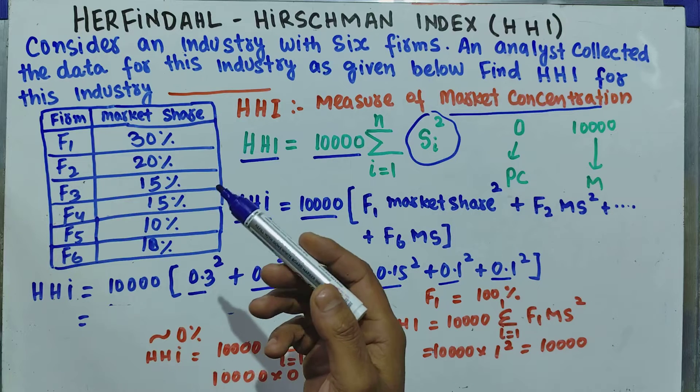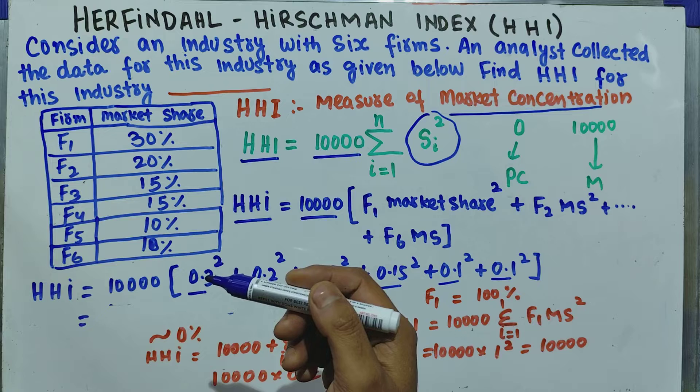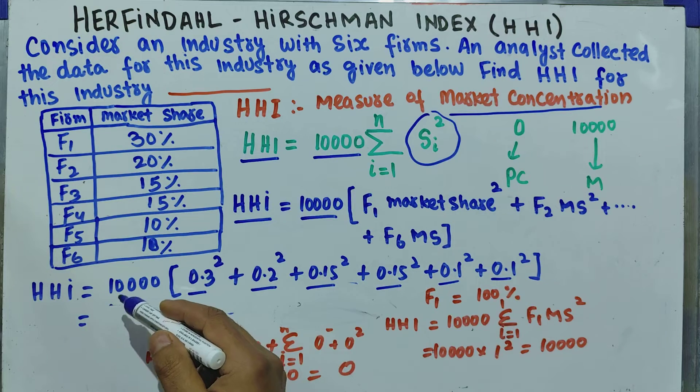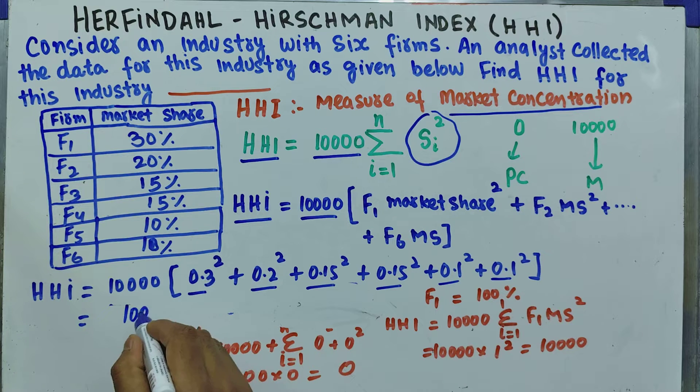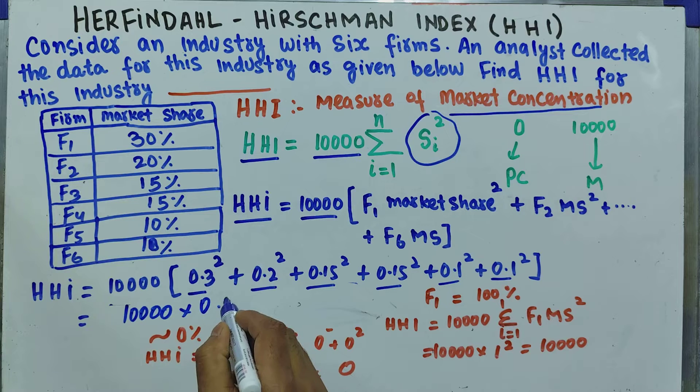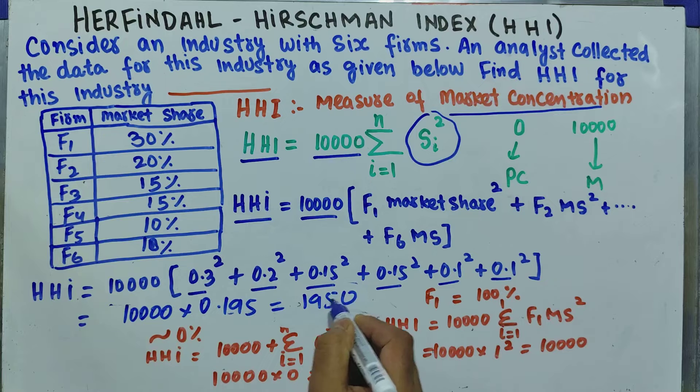What we do is add the share of each firm squared, sum them up, and multiply by 10,000. When we do this, we get 10,000 times this sum, which comes out to be 0.195, and it comes out to be 1950. This denotes the HHI in this case.